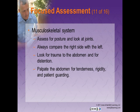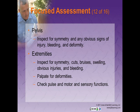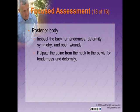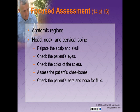For musculoskeletal assessment, assess posture if standing, look at joints, check for range of motion, and always compare the right side with the left. Look for weakness or atrophy and assess equality of grip strength. Look for trauma to the abdomen and for distension, and palpate the abdomen for tenderness, rigidity, and patient guarding. Inspect the pelvis for symmetry and obvious signs of injury, bleeding, or deformity — if you feel movement or crepitus, or if the patient reports pain, severe injury may be present. For extremities, inspect each for symmetry, cuts, bruises, swelling, obvious injuries, and bleeding. Palpate along the extremity for deformity, and check pulse, motor function, and sensory function in each extremity. For the posterior body, inspect the back for tenderness, deformity, symmetry, and open wounds, and carefully palpate the spine from neck to pelvis.